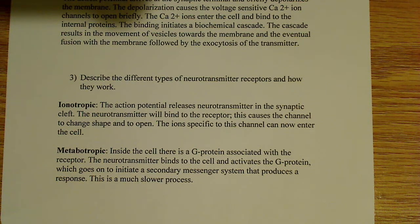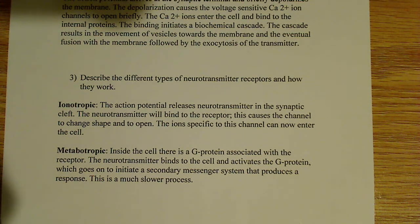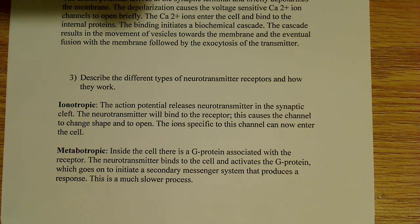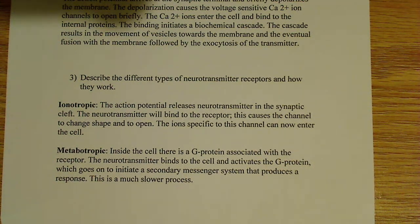Now, there's another type of receptor which is a lot slower, and that's called the metabotropic receptor. Inside the cell there's what's known as G proteins, and G proteins are associated with this receptor. The neurotransmitters bind to the receptor and activate the G protein, which goes on to initiate what's known as a secondary messenger system.